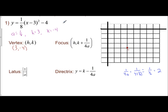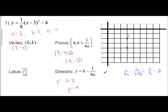So when I'm finding my focus, I have my h value which is 3, comma, the k which is negative 4, plus 2. Well, negative 4 plus 2 is negative 2. So your focus is located at the coordinate 3, negative 2. And I put an F there so I know it's my focus. So your directrix is y equals your k value, which is negative 4, minus the 1 over 4a, which is 2. So I have negative 4 minus 2, so y equals negative 6.